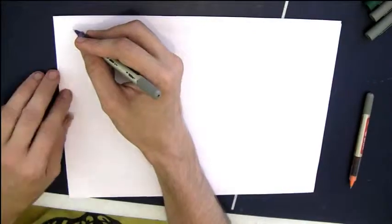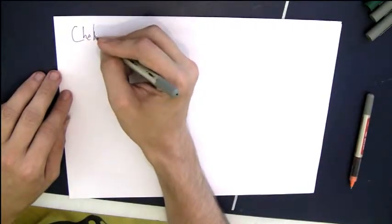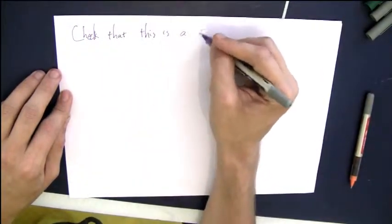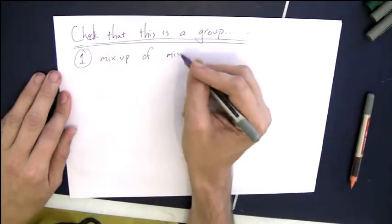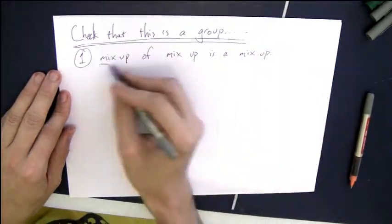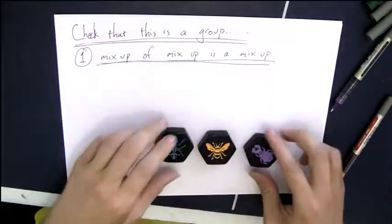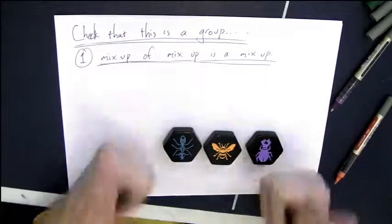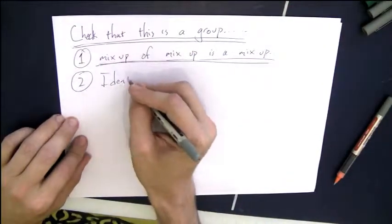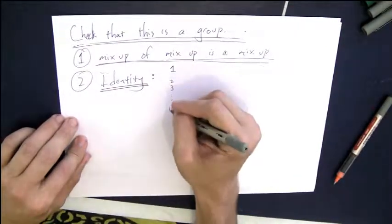Now, once we have a set and an operation, we really need to actually check that it forms a group. So remember, there's four things to check. So if I take a permutation, it's just like mixing things up somehow. And if I mix things up one way, then mix those mixed up things another way, I get another mix up. So permutation composed with the permutation is still a permutation.